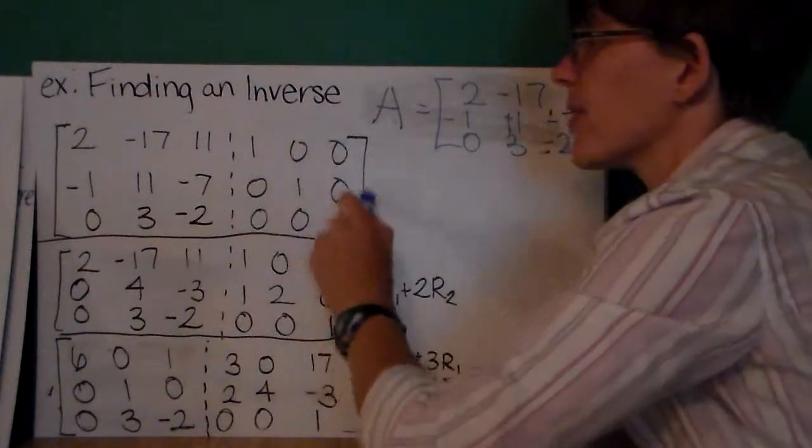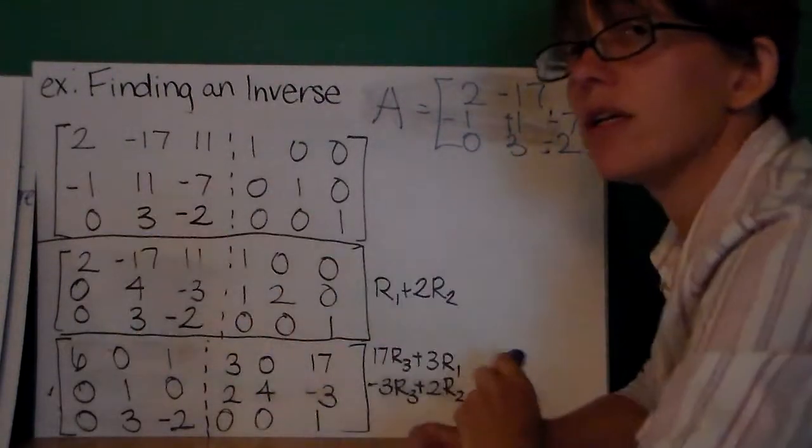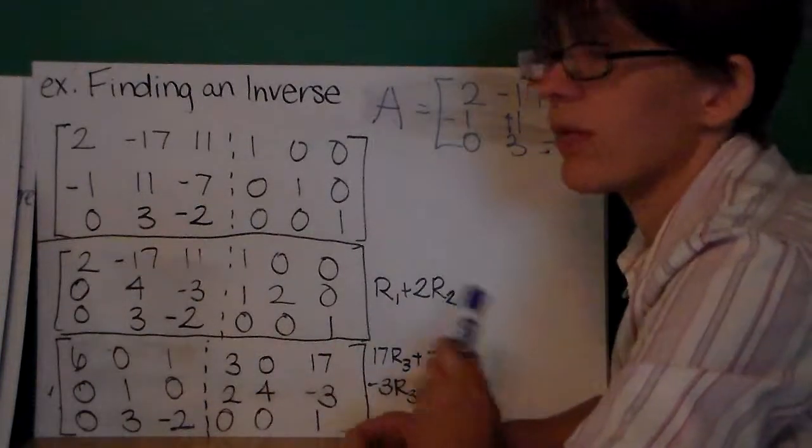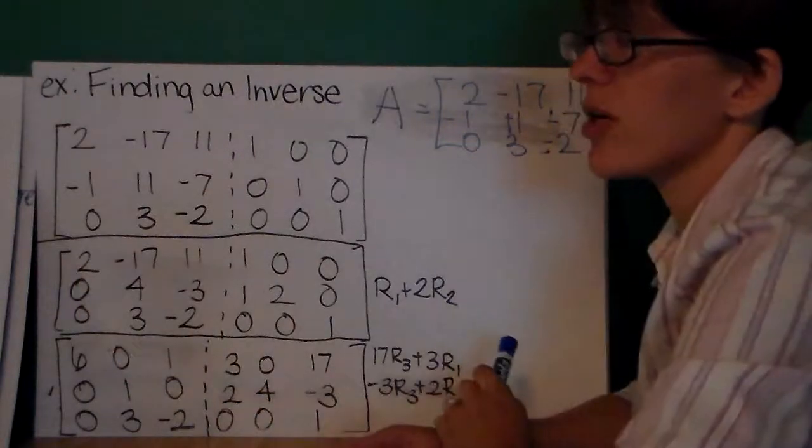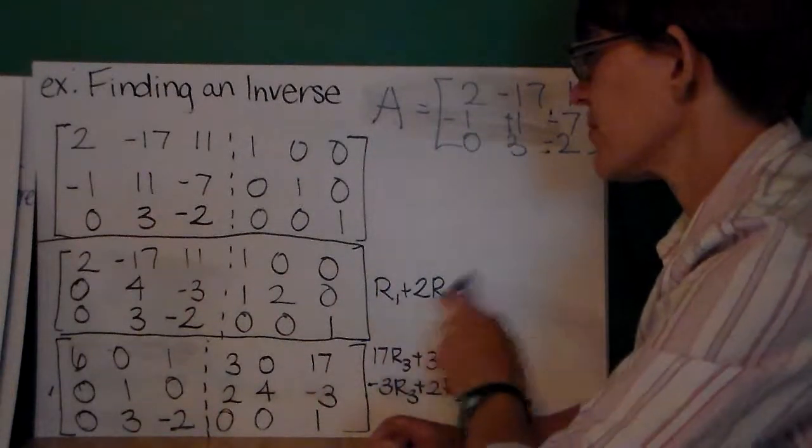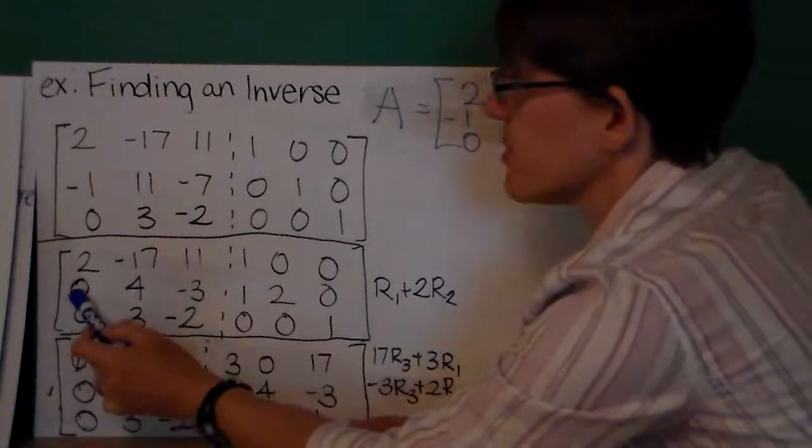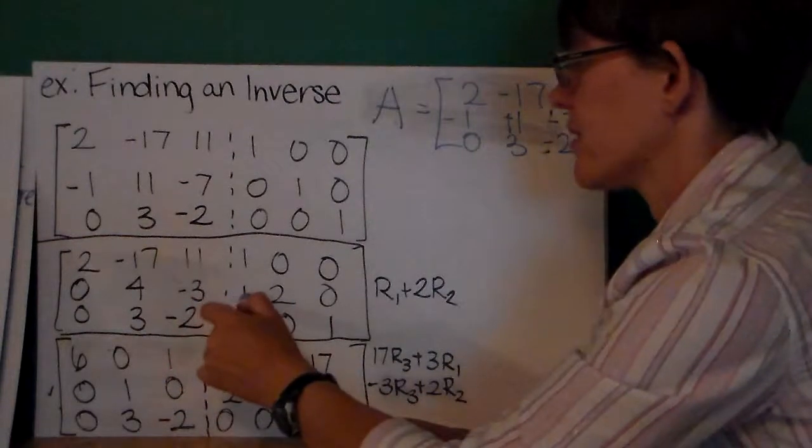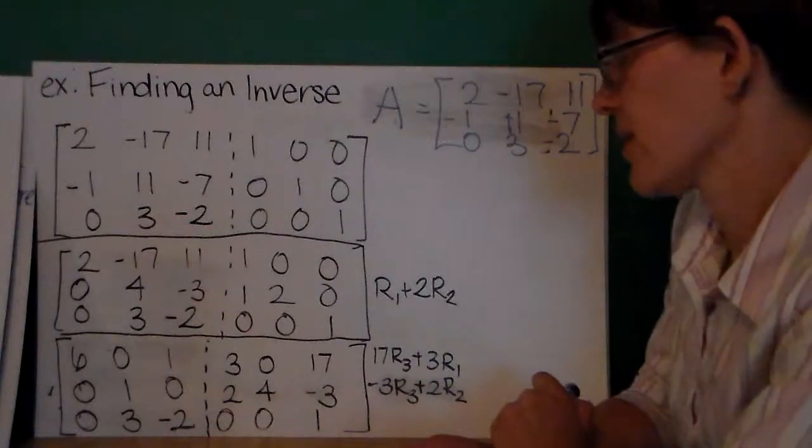So here's my original matrix. Here's my original identity matrix. The first thing I'm going to do is get rid of these extra, I call them X's, in the first column. I'm going to turn everything in the first column, except for the first column, first row entry, into zeros. So to do that, I first add R1 plus 2 times R2, and I'm going to write my answer in R2. And you see my answer written here, [0, 4, -3]. And I'm adding 1, 2, and 0. So already this is starting to change.